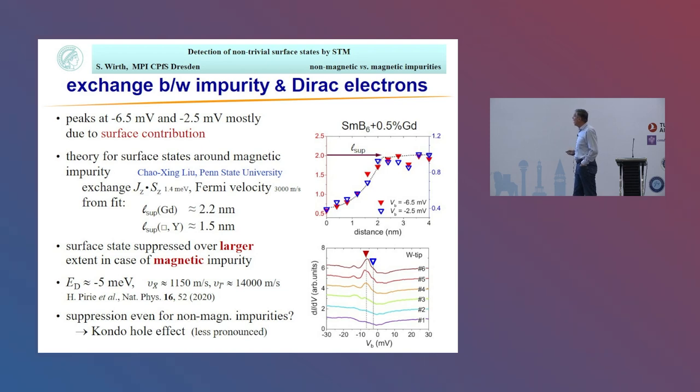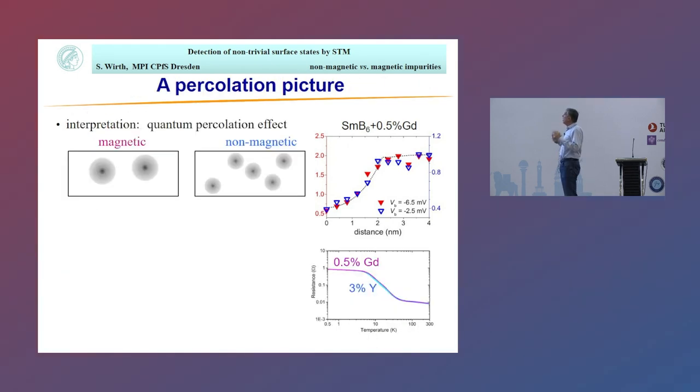One question remains: why do we see a suppression in the case of non-magnetic impurities at all? You have to think that what we're starting with is a Kondo insulator, samarium hexaboride. Only if we have samarium on each lattice site can we build up the Kondo insulating properties. If we take away samarium, we basically create what's known as a Kondo hole, and that can also be magnetic. We think that's the origin why we see something in case of non-magnetic impurities, but as you can see, it's less pronounced.